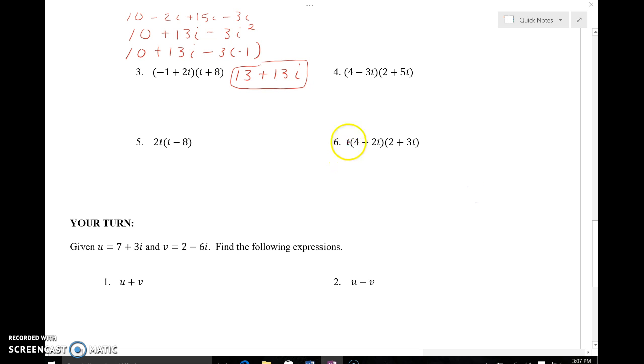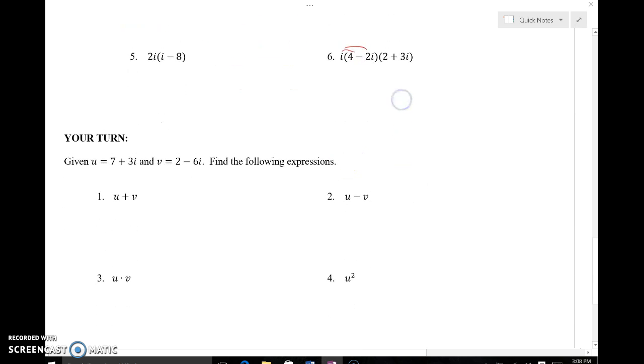Alright something that looks a little bit more complicated maybe down here with 6. I've got an i on the outside as well as 2 binomials. What I'm going to do first is I'm going to go ahead and distribute this i in here and then foil or double distribute. So I'm going to go ahead and distribute that i and I'm going to get, let's move it up a little bit here, I'm going to get 4i minus 2i squared and that's going to be a binomial and then I still have my 2 plus 3i that I'm going to have to distribute here in a second because of the multiplication that's taking place here. Alright this i squared is negative 1 so negative 2 times negative 1 is a positive 2 so I could just rewrite this like that and now